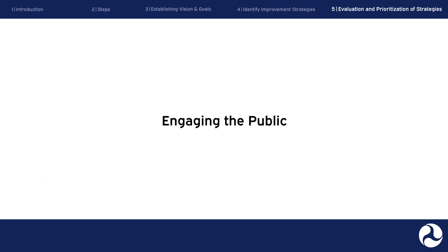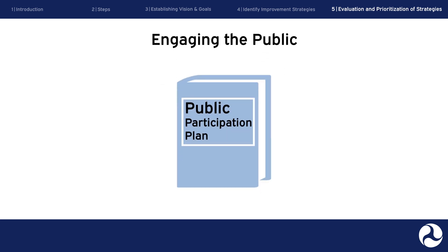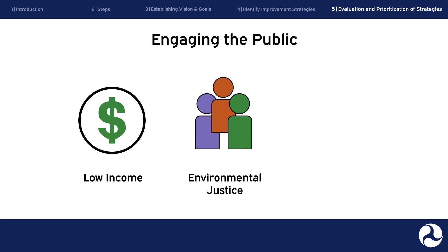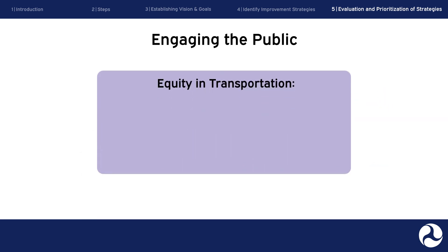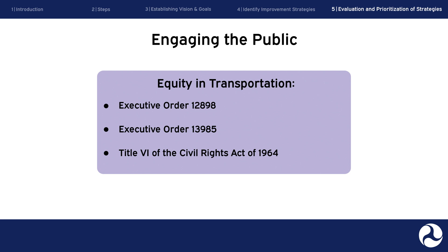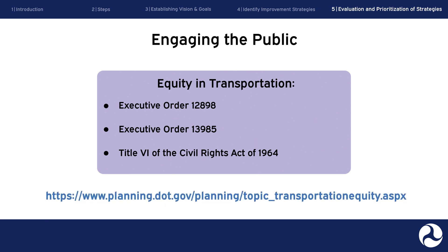When you are going through the prioritization process, you will want to continue engaging the public. Be sure to follow your public participation plan and pay particular attention to seek fairness in meeting the needs of all community members, including low-income, environmental justice, and minority communities who have often been overlooked in past transportation planning processes. It is crucial that you engage previously overlooked communities when prioritizing strategies. There are a number of executive orders as well as the Civil Rights Act of 1964 which can help you address these issues. For more information, see the U.S. DOT web page on transportation equity.